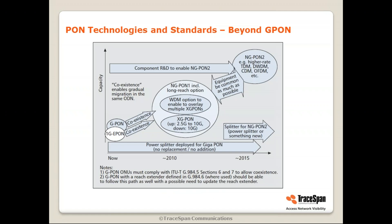Before we get into the details, let's look at a slide which was created about 10 years ago to illustrate the future of PON technologies. At that time, G-PON and 1G E-PON were relevant technologies already available and deployed. XG-PON 1 at that time was being standardized, where XG-PON 1 was 2.5G up and 10G down, and there were also some plans to standardize 10G by 10G under XG-PON. Then there were some other directions: WDM-PON, NG-PON 1 including long reach, and then steps beyond this which were NG-PON 2, with different directions such as a combination of TDM, DWDM, CDM, OFDM, and various other ideas.